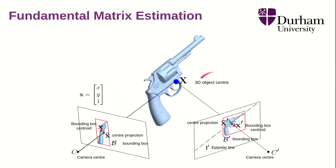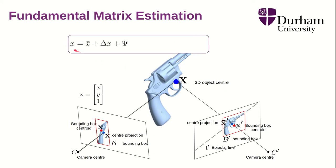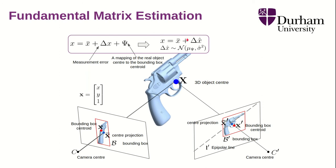Given a point representing the 3D object center, the projection to each image is x-bar. We don't know this x-bar in each image, but we can approximate it with the bounding box centroid of the annotations. Each coordinate is modeled as a true point x-bar or y-bar plus a measurement error with normal distribution and zero mean, and a mapping of the real object center to the bounding box center modeled as another error with non-zero mean.